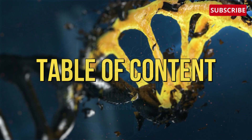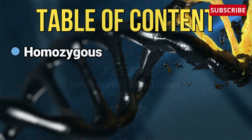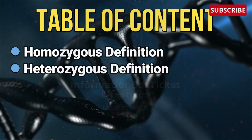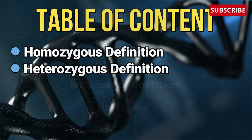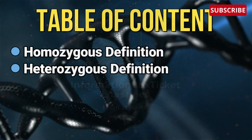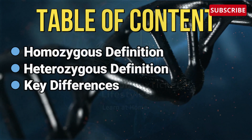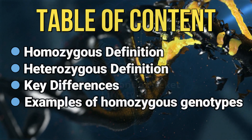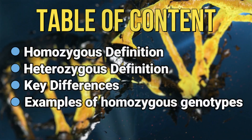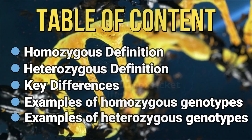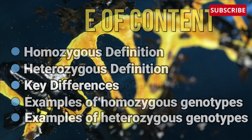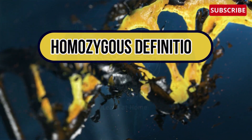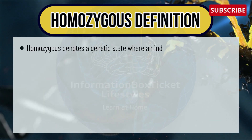Let's begin with the table of contents. First, we will define what is homozygous, then we will define what is heterozygous, and after understanding these we will look at key differences between both, and we will see a few examples of homozygous genotypes and heterozygous genotypes.